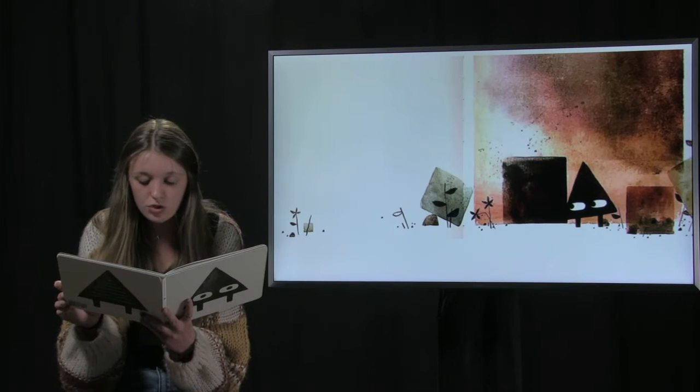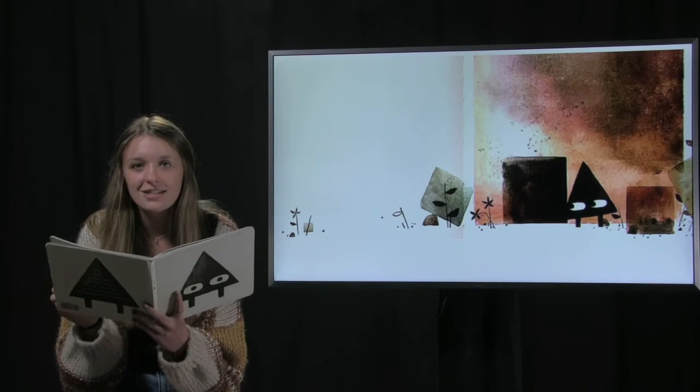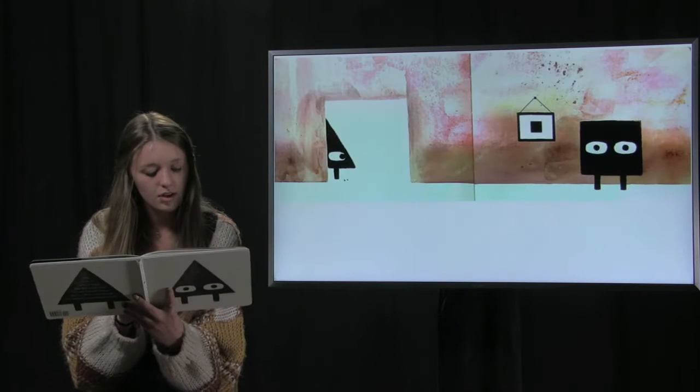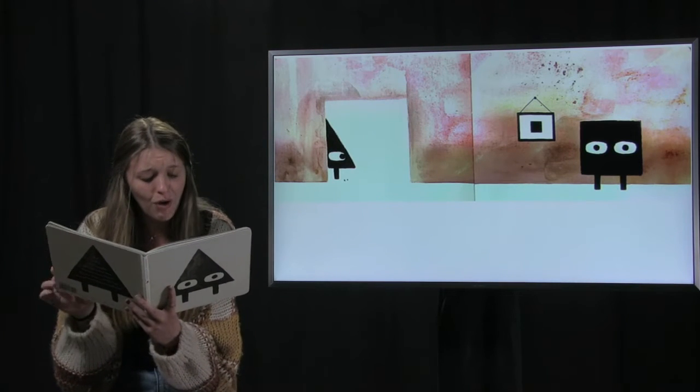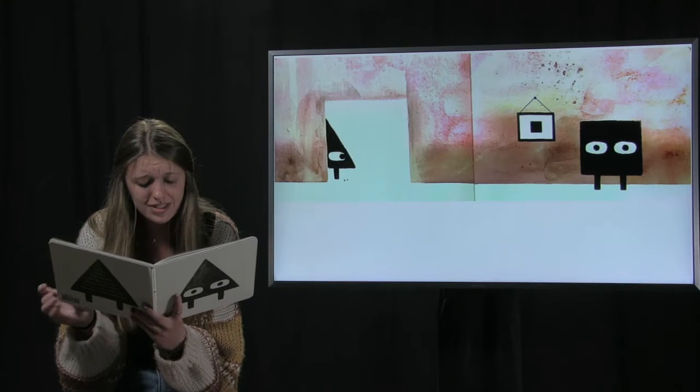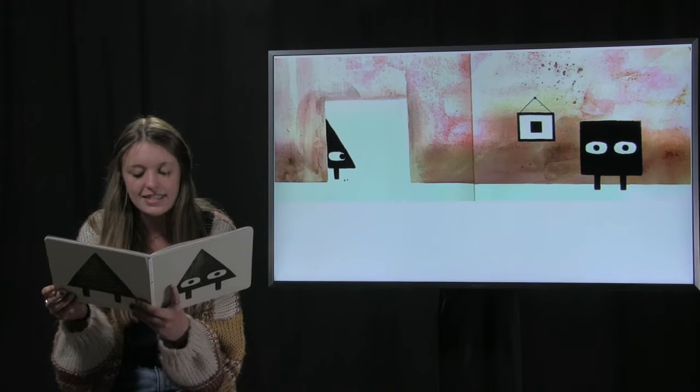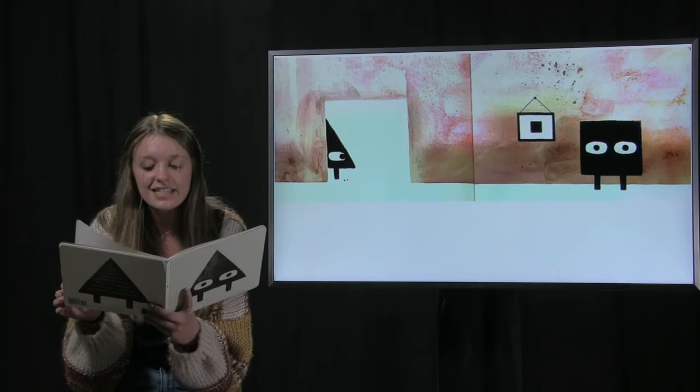Triangle walked up to Square's door and said, hiss, just like a snake. Square was afraid of snakes. Oh me, oh my, said Square. Go away, you snake. Leave my door. Hiss, said Triangle. Hiss, hiss, hiss.